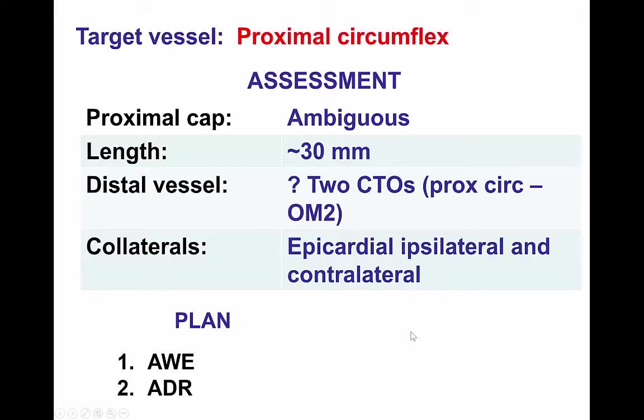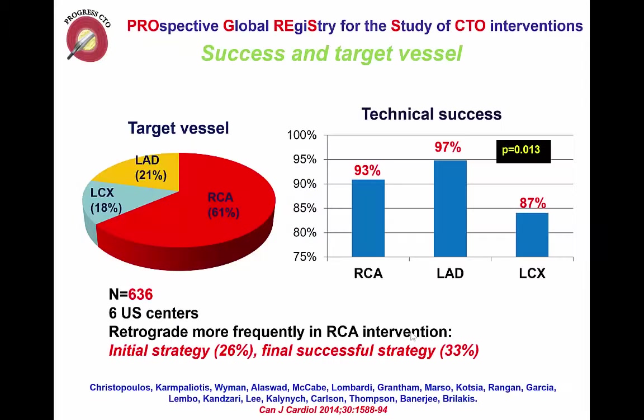Those collaterals were not considered appropriate for the retrograde approach. Therefore, the plan was for antegrade wire escalation and antegrade dissection re-entry without attempting retrograde crossing.